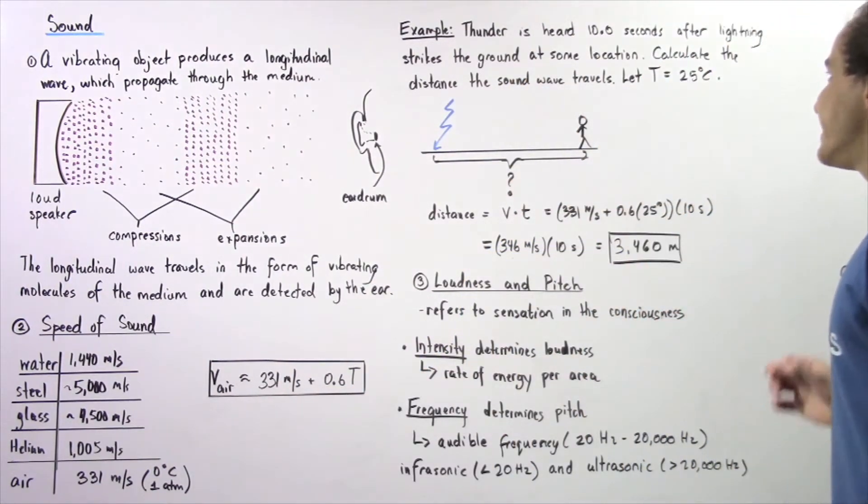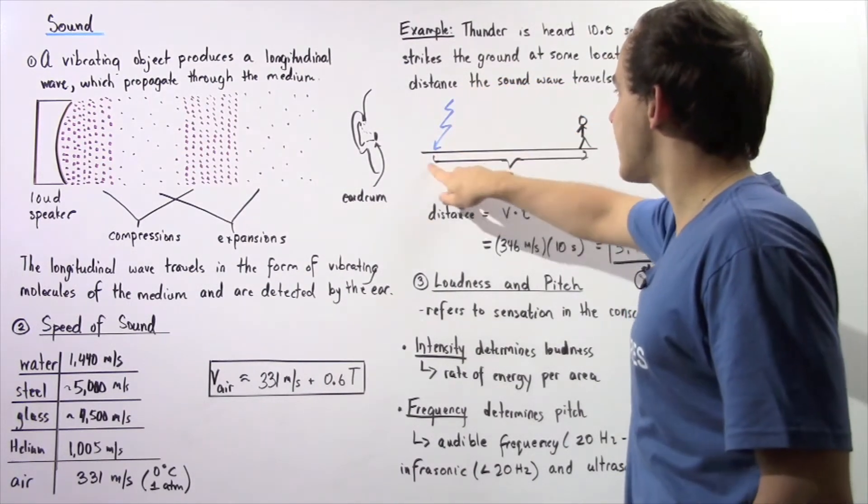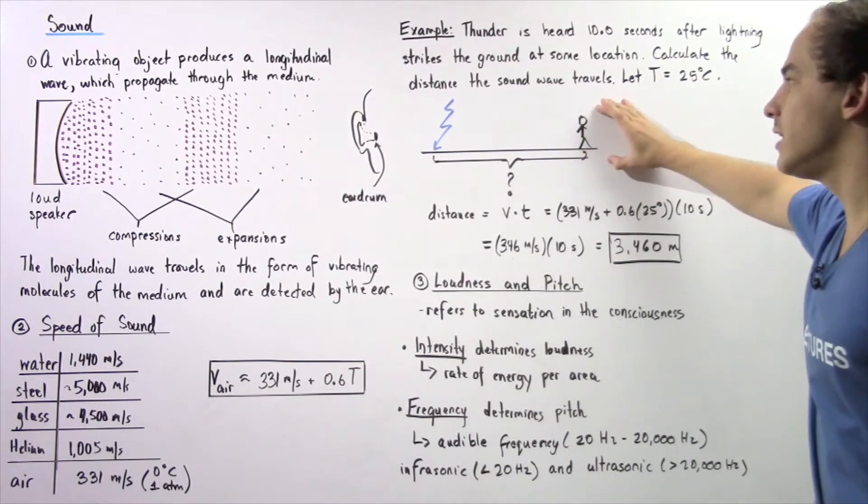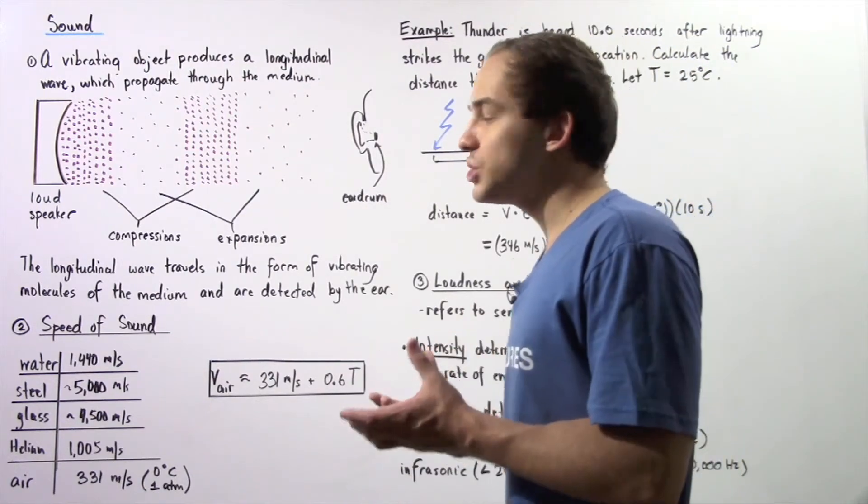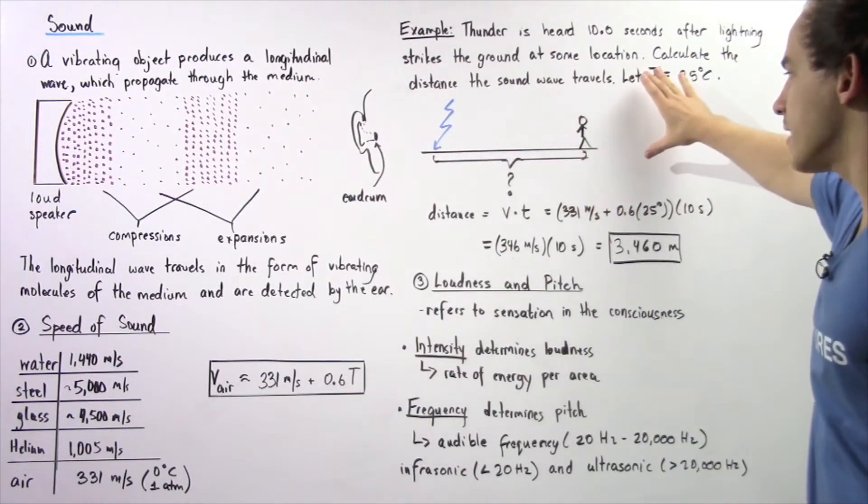Thunder is heard 10 seconds after lightning strikes the ground at some unknown location. We want to calculate the distance the sound wave travels. Let's suppose the temperature of the air is 25 degrees Celsius. We have lightning that strikes at some unknown distance from a person listening to that lightning. Lightning strikes, produces thunder, produces a sound wave, and that sound wave propagates through the air.